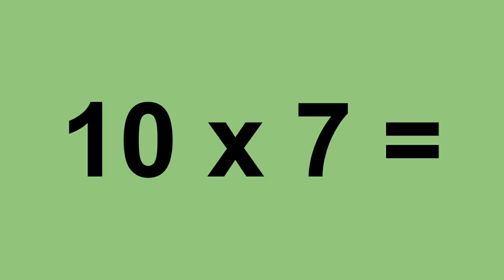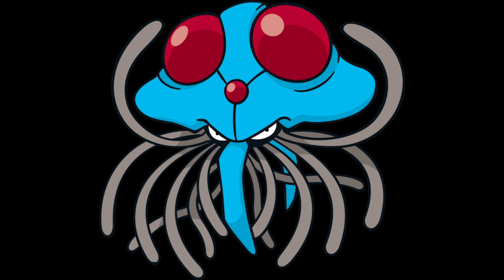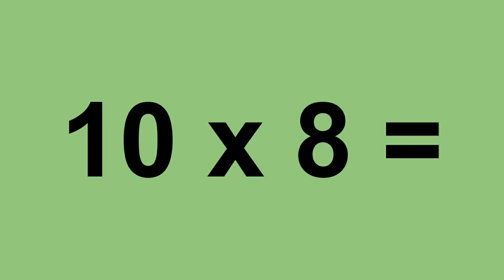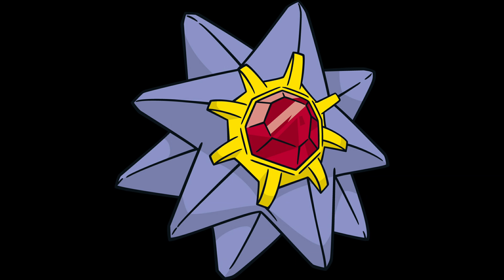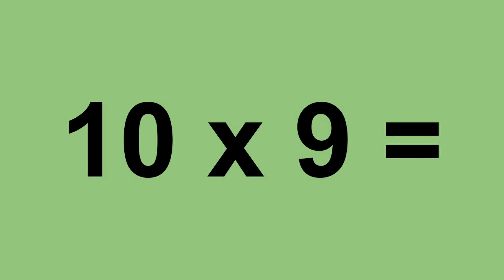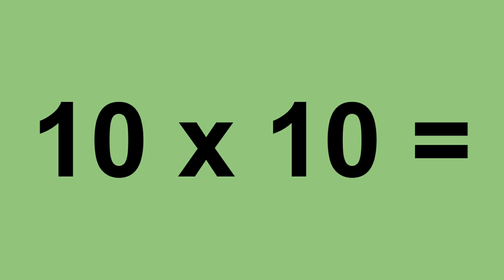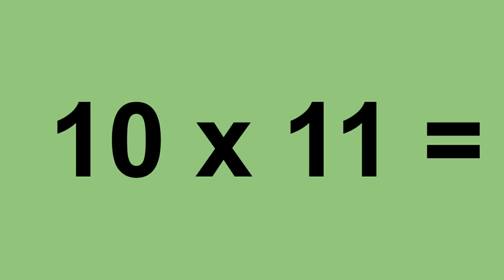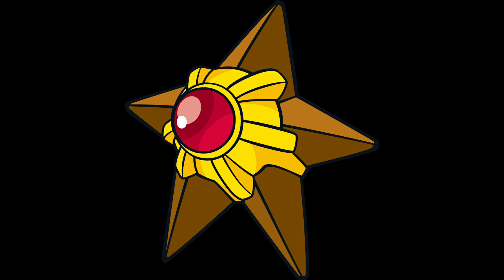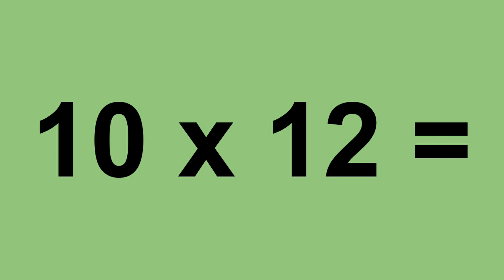Ten times seven equals seventy. Ten times eight equals eighty. Ten times nine equals ninety. Ten times ten equals one hundred. Ten times eleven equals one hundred and ten. Ten times twelve equals one hundred and twenty.